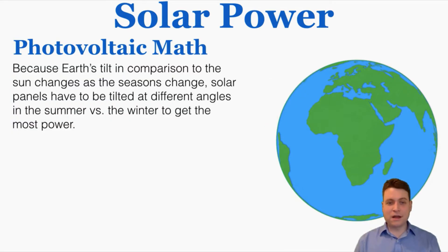Because earth's tilt in comparison to the sun changes as the seasons change, solar panels have to be tilted at different angles in the summer versus the winter to get the most power. So the thing that causes the seasons is the earth's tilt. So the intensity of the sun is affected by the tilt of the earth and the angle that the sun's rays of intensity hit different parts of the earth.